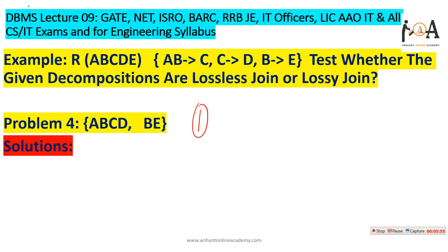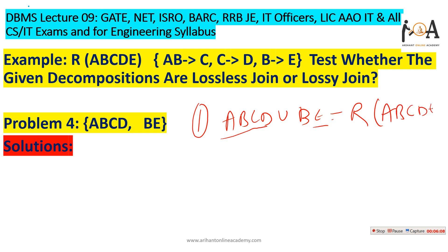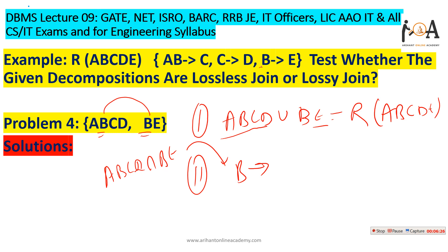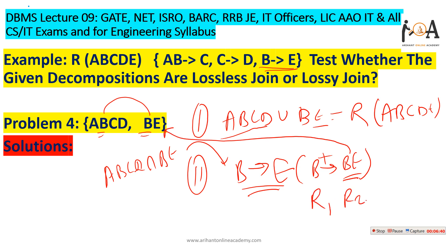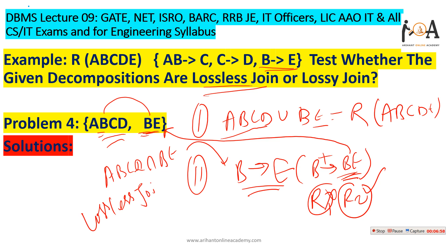In problem four, the decomposition is R1={A,B,C,D} and R2={B,E}. The union gives {A,B,C,D,E} — complete R — satisfying condition one. Intersecting R1 and R2 gives B as common. B derives E, so the closure of B is {B,E}, which is a super key of R2. Since the intersection is a super key of R2, this decomposition is a lossless join.